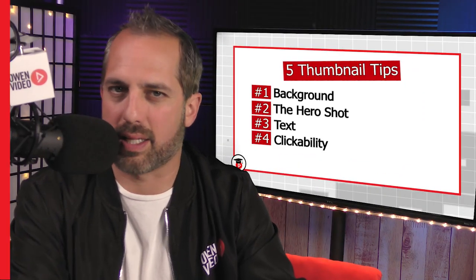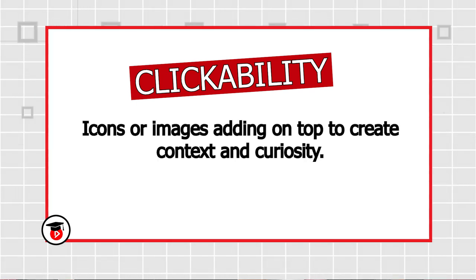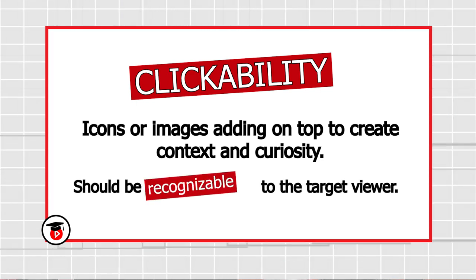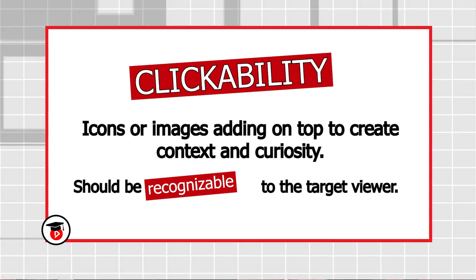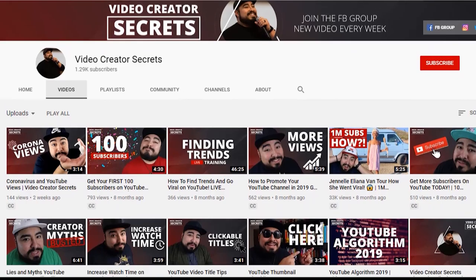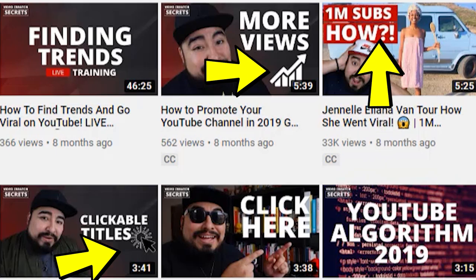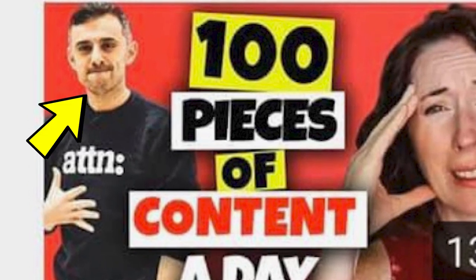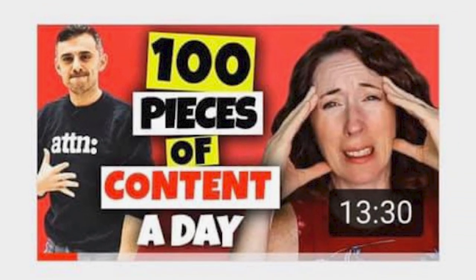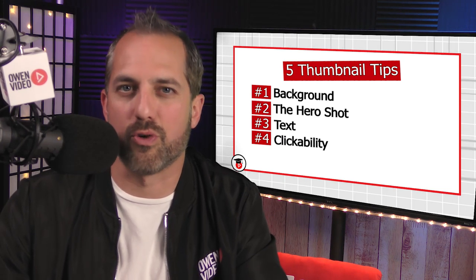The next thumbnail design tip is clickability. Clickability represents icons or images that you add on top of the thumbnail to create context and curiosity. The images or icons should be easily recognizable to the industry or interest of the target viewer. My friend Anthony Ambres does this really well — he always adds an interesting little icon that grabs your eye and leads the viewer to click. In Karen's case, we added a picture of Gary Vee, but made him smaller so Karen remains the hero of the video. Gary's picture is highly recognizable in her industry and will definitely cause her viewers to click.